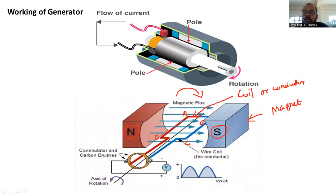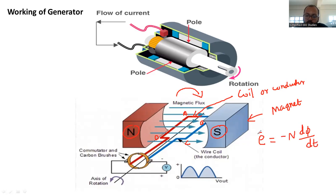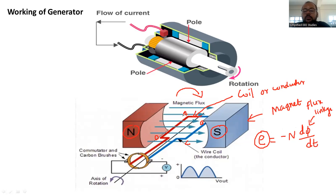As a result, flux changes will take place. If the fluxes cut and flux changes occur, an induced EMF is going to be generated inside coil ABCD. The induced EMF is given by E = −N × dΦ/dt, where dΦ/dt is the flux linkage and N is the number of coils. If I want to produce more EMF, I need to use more coils. The negative symbol is because of Lenz's rule.